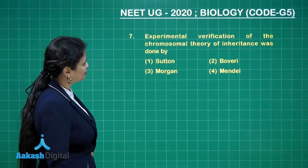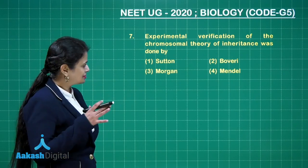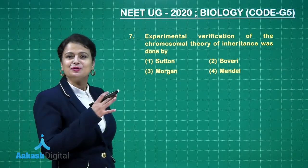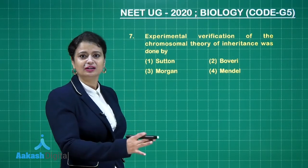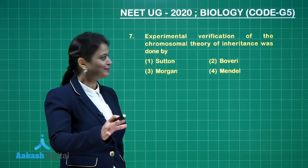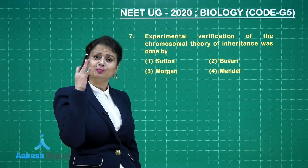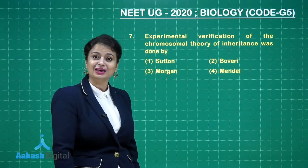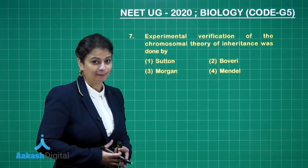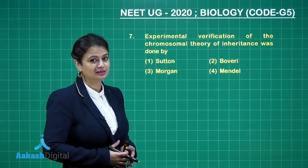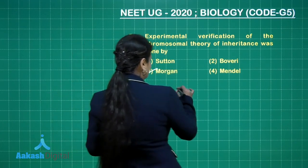Experimental verification of chromosomal theory of inheritance was done by Morgan. You should not confuse this with Sutton and Boveri — Sutton and Boveri proposed the chromosomal theory of inheritance, but the experimental verification was done by Morgan. He utilized Drosophila melanogaster, that is fruit flies. So the right answer here is option number three.